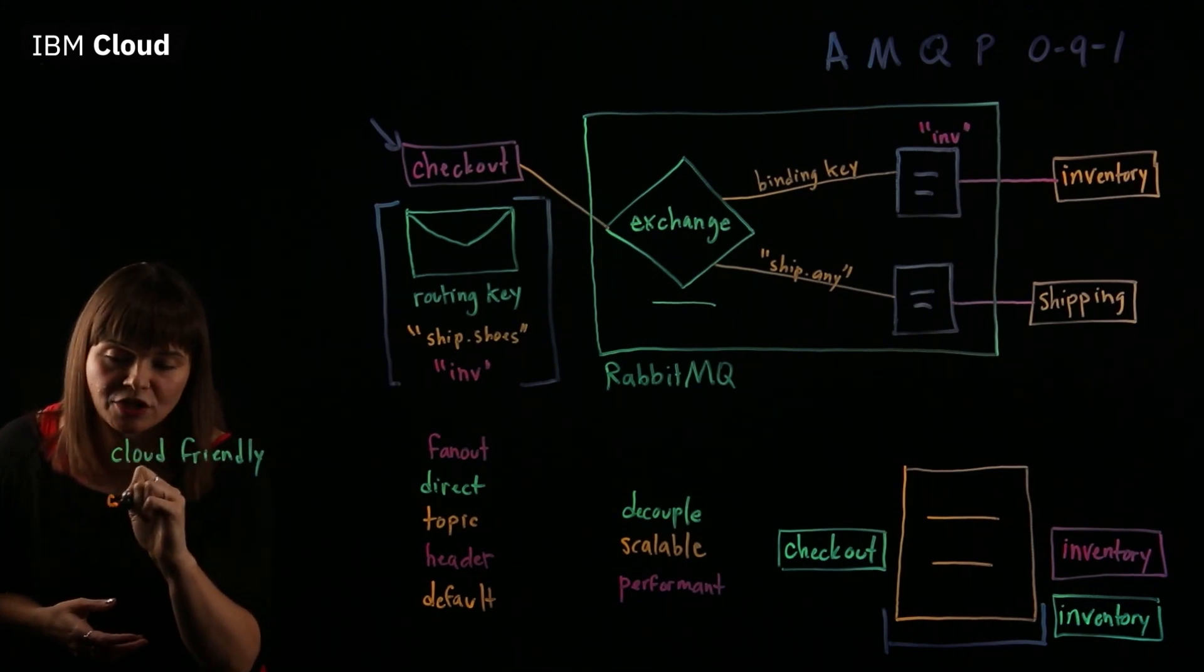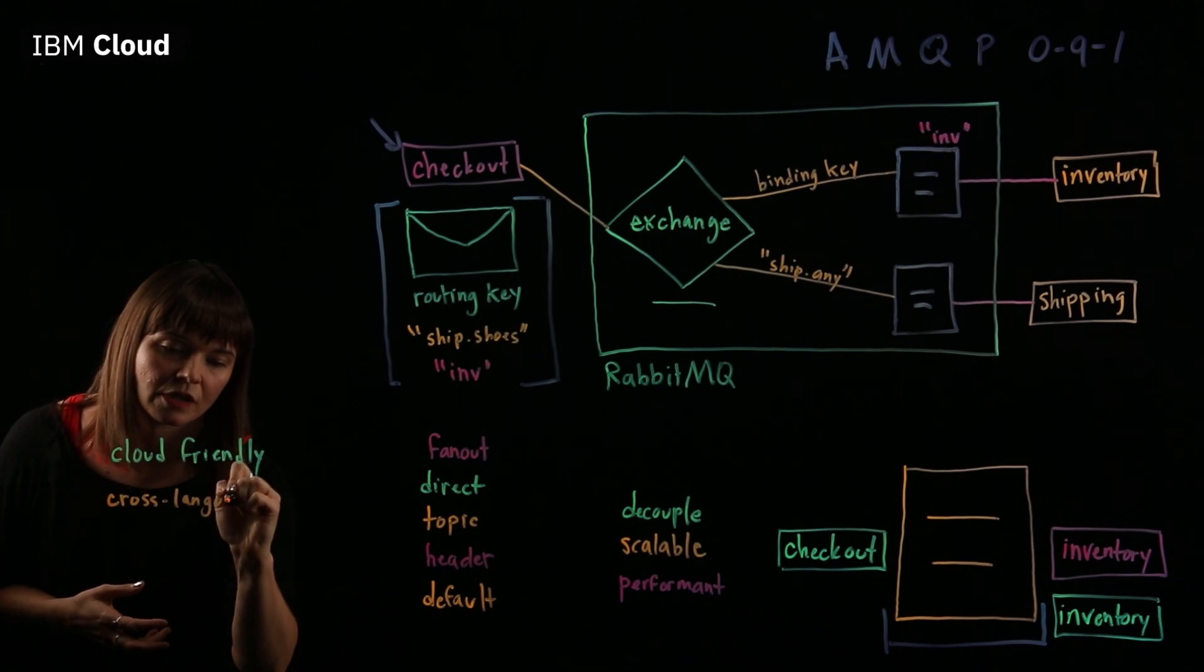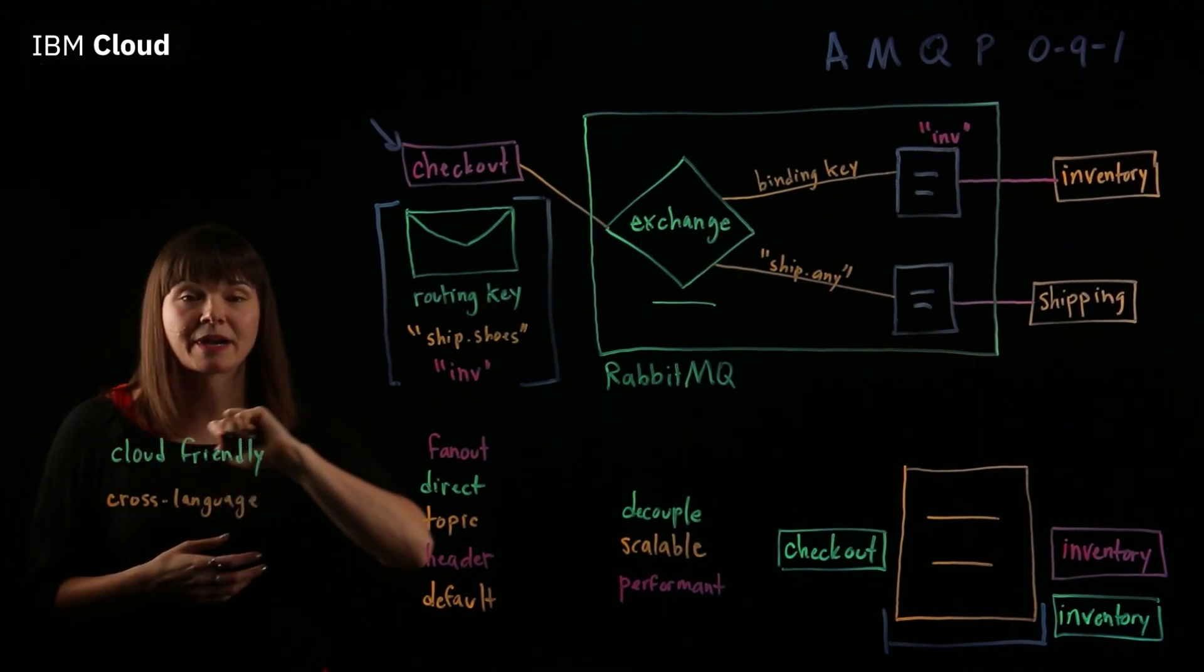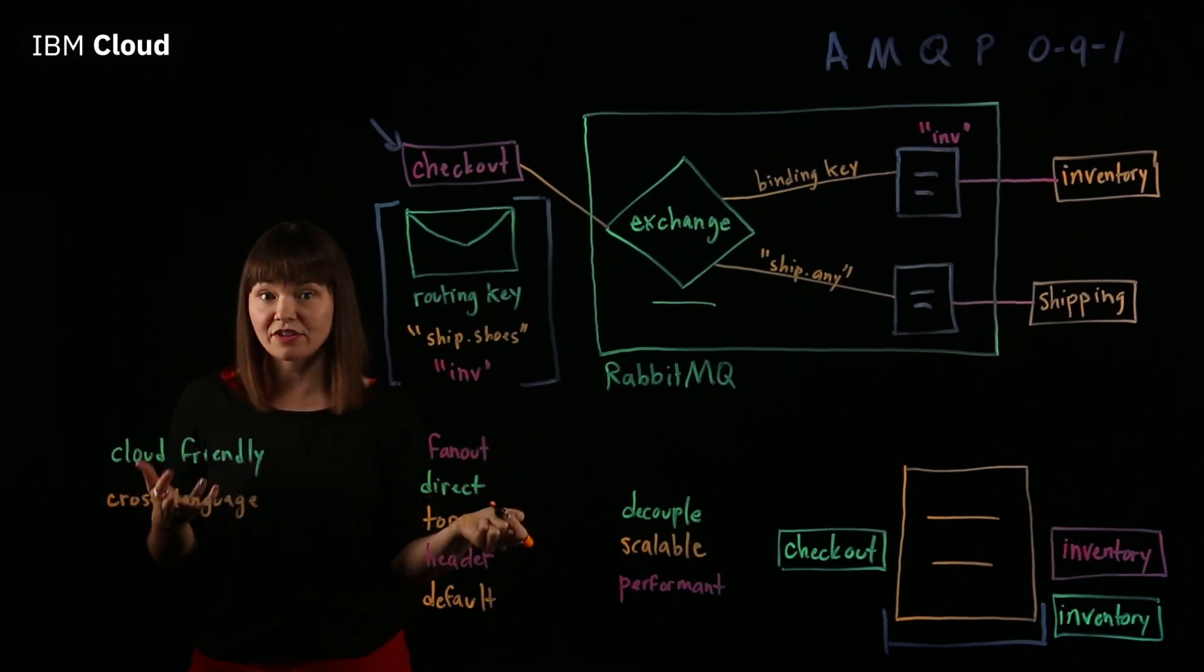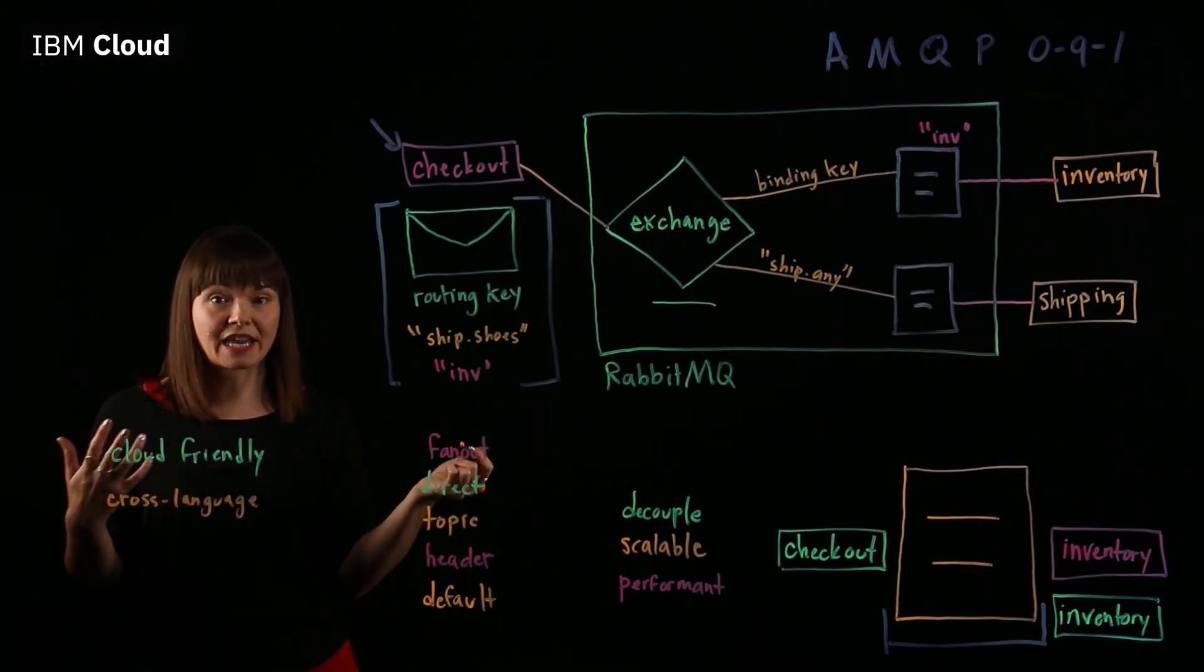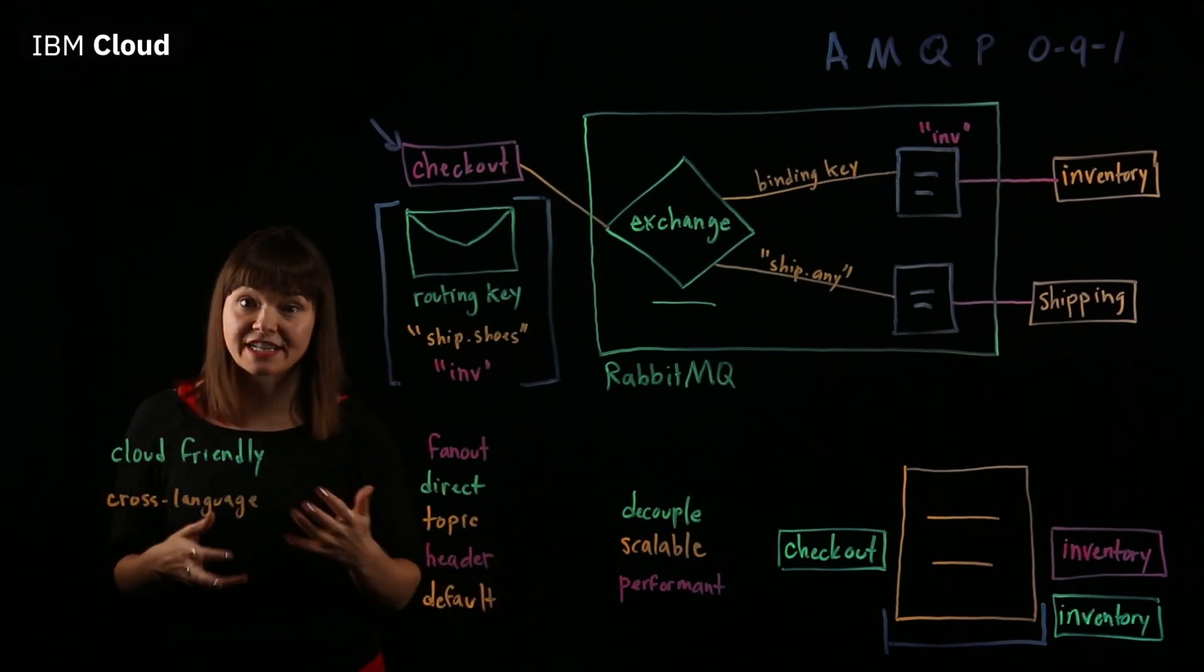RabbitMQ can do cross-language communication. So if a message is produced by checkout in Go, it can be consumed by inventory in JavaScript, and consumed by shipping in Python. And really the possibilities are endless. It has a very extensive library.